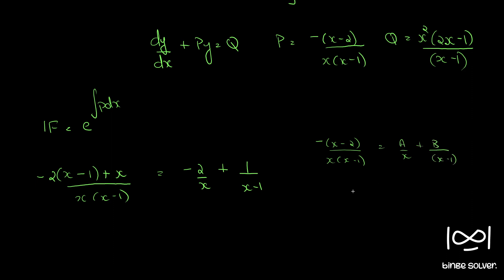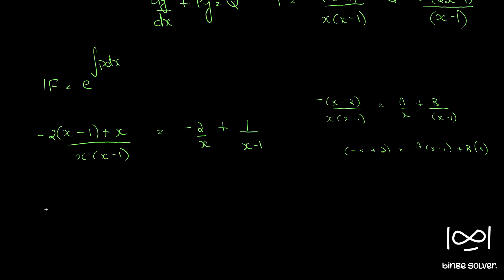Using partial fractions, we write minus(x minus 2) over x(x minus 1) as A/x plus B/(x minus 1). Comparing numerators, minus x plus 2 equals A(x minus 1) plus Bx. Applying various values of x gives us the values for A and B, yielding minus 2/x plus 1/(x minus 1).